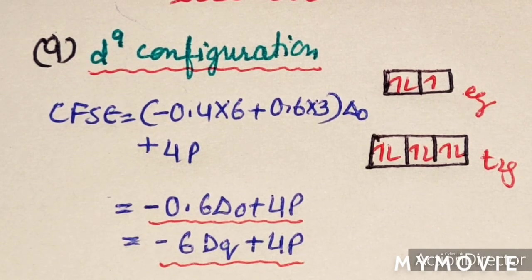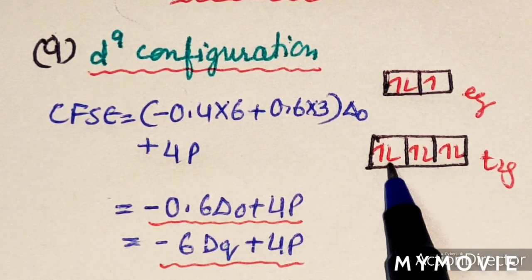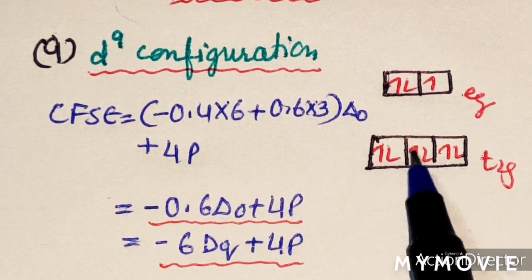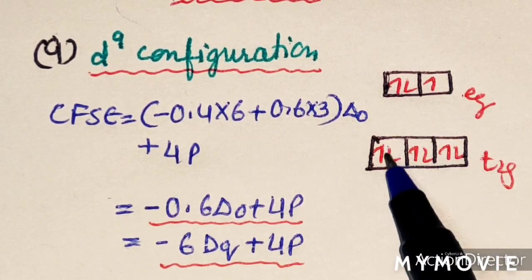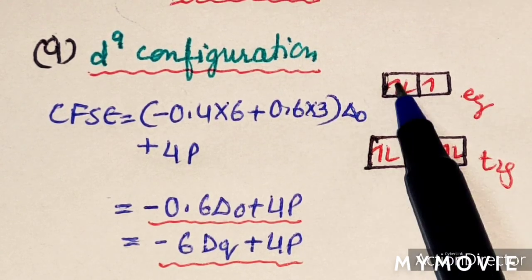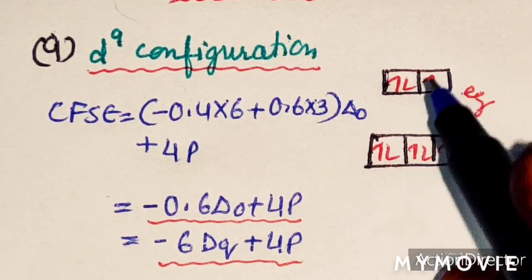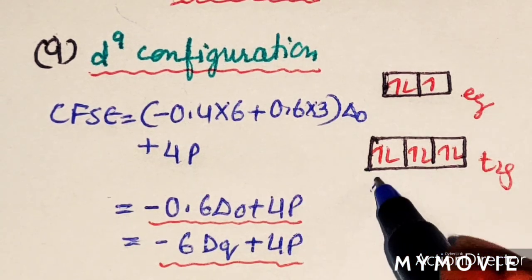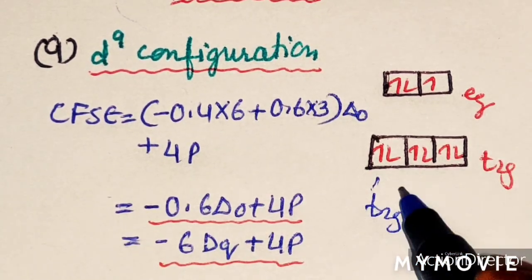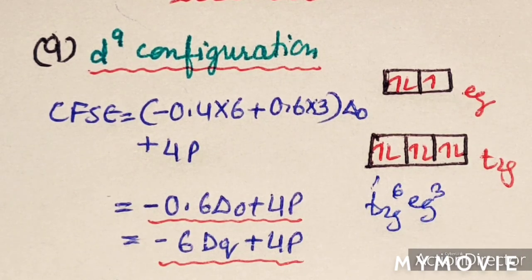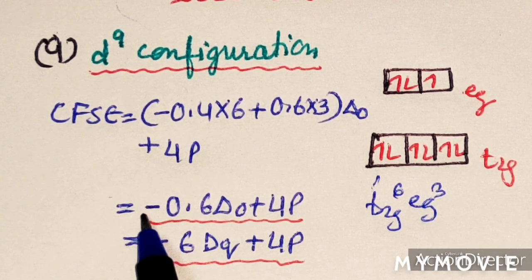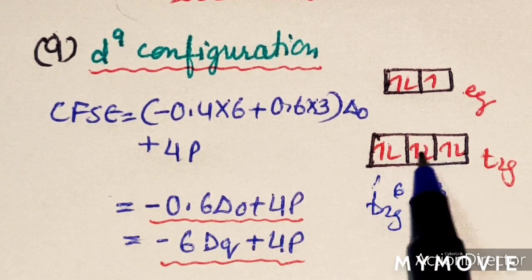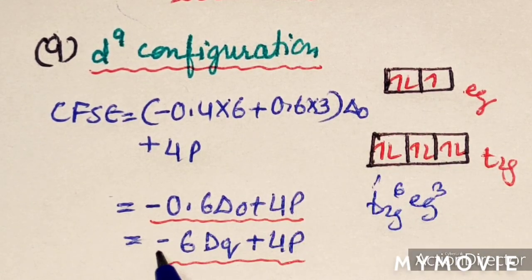For D9 configuration, regardless of how electrons are filled, the configuration is always T2G6EG3. With 4 paired electrons, CFSE = −0.6 delta O + 4P, or −6 DQ + 4P.